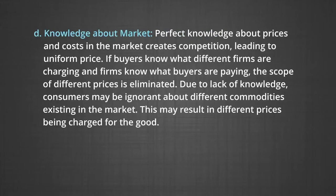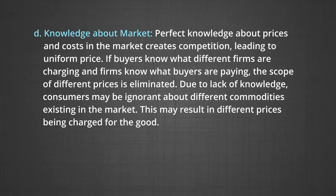Number four, knowledge about market. Perfect knowledge about prices and costs in the market creates competition, leading to uniform price. If buyers know what different firms are charging and firms know what buyers are paying, the scope of different prices is eliminated. Due to lack of knowledge, consumers may be ignorant about different commodities existing in the market, which may result in different prices being charged for the good.